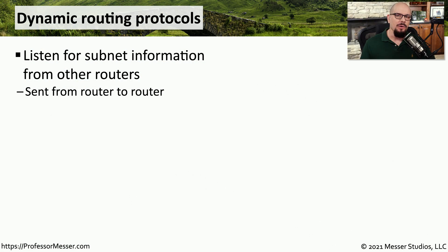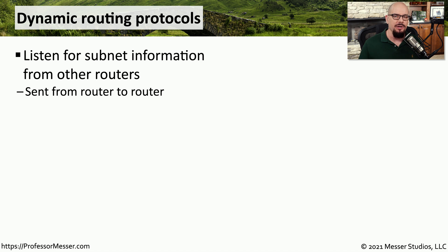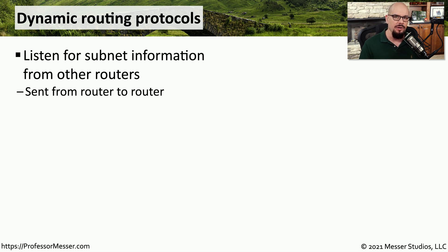When we're surfing around to different websites, we often don't think about the process it takes to get information from our computer to that remote web service and then back again. This process is handled by a series of routers on the internet, and each one of the routers knows exactly where your traffic should be going at every hop. It's able to accomplish this thanks to a series of routing tables within the router, and one very common way to update that routing table is through the use of dynamic routing protocols.